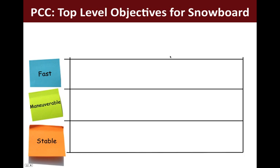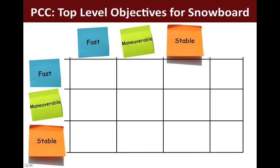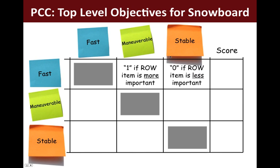Note that these are all adjectives. To make the PCC, list your objectives in a single column. Then draw three rows. Next, list your objectives across the top in the same order as you listed them going down. Next, draw columns with one extra column at the far right. Label this column score. Next, cross out or gray out the squares along the diagonal. To use the PCC, write a 1 if the row item is more important than the column item, or a 0 if the row item is less important than the column item. In the score column, sum the scores for that row. Final note: be sure to make sure your scores are consistent.